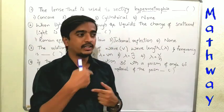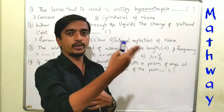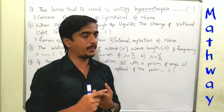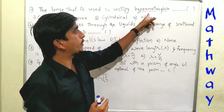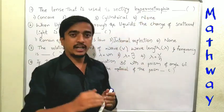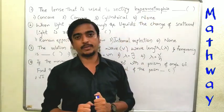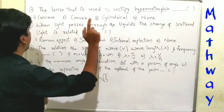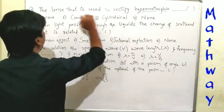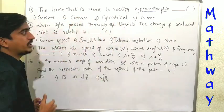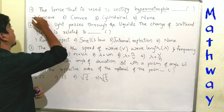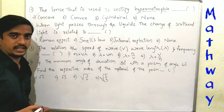Myopia is for far objects. Two different objects relate to myopia. Hypermetropia is the other type where nearby objects are not seen clearly. Hypermetropia is corrected by a convex type of lens. Option one is correct.